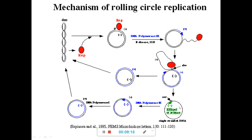At that particular looped region, a small RNA primer is synthesized by RNA polymerase or primase. Once the RNA primer is formed, DNA polymerase III comes and synthesizes the DNA. When synthesis is completed, DNA polymerase I removes the RNA primer, and you get two complete strands of the plasmid — this is how rolling circle replication produces plasmid DNA in bacteria.